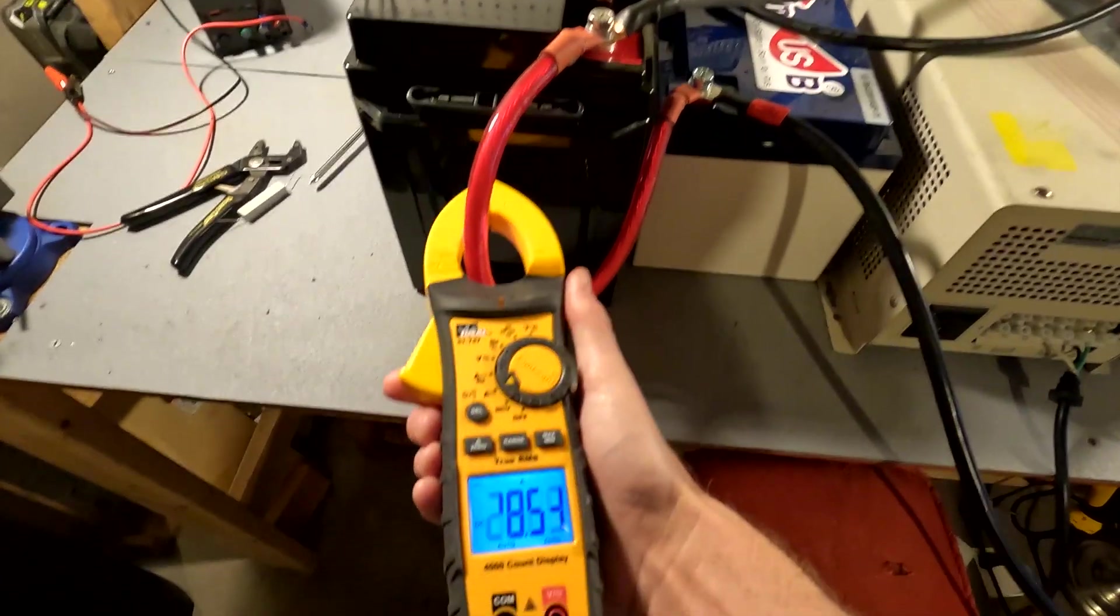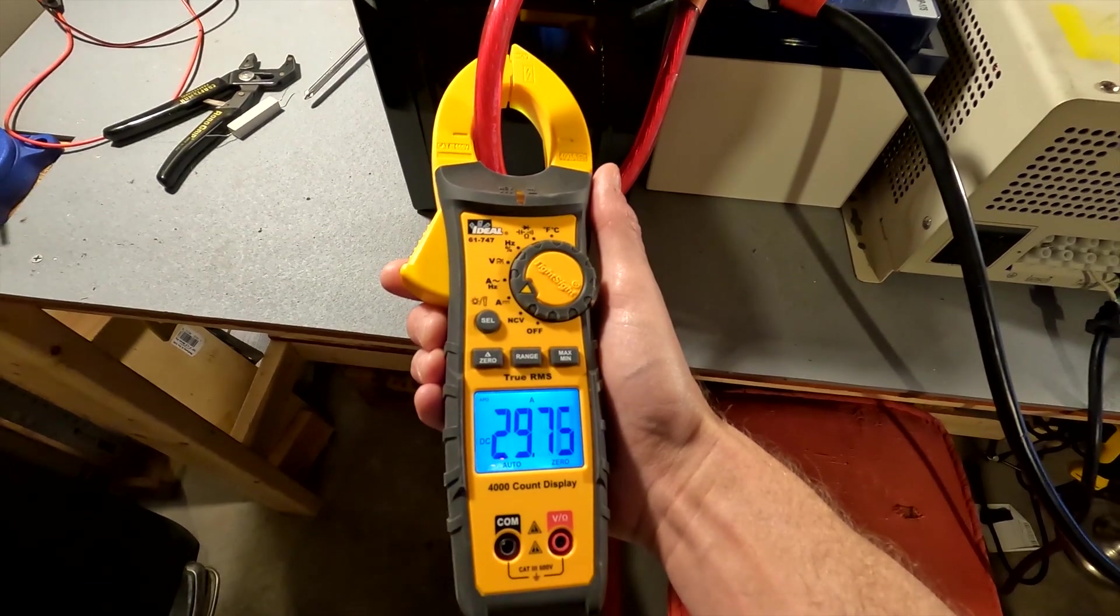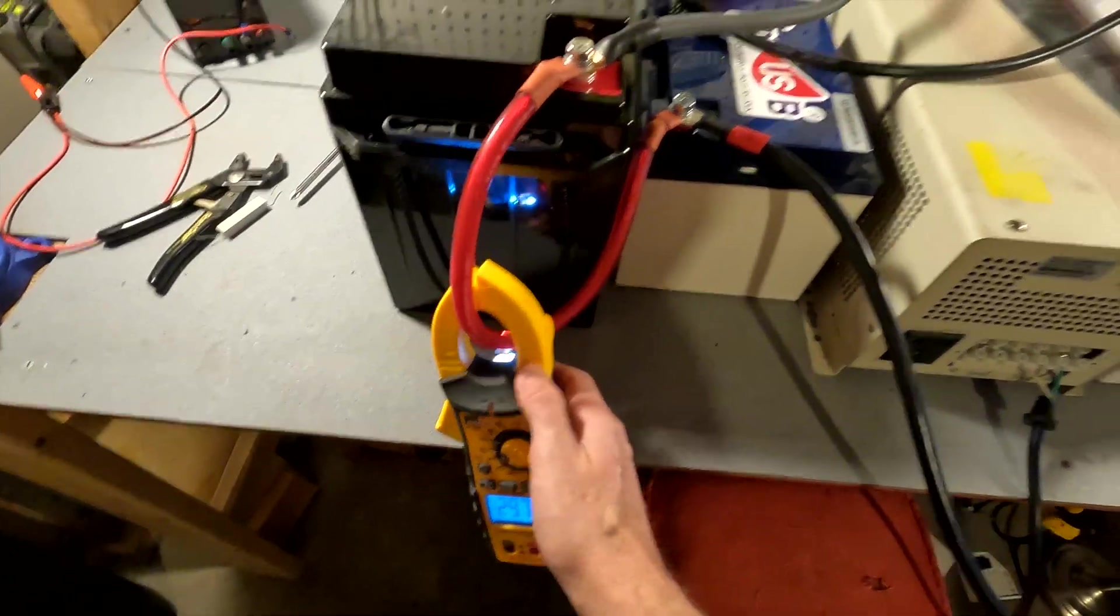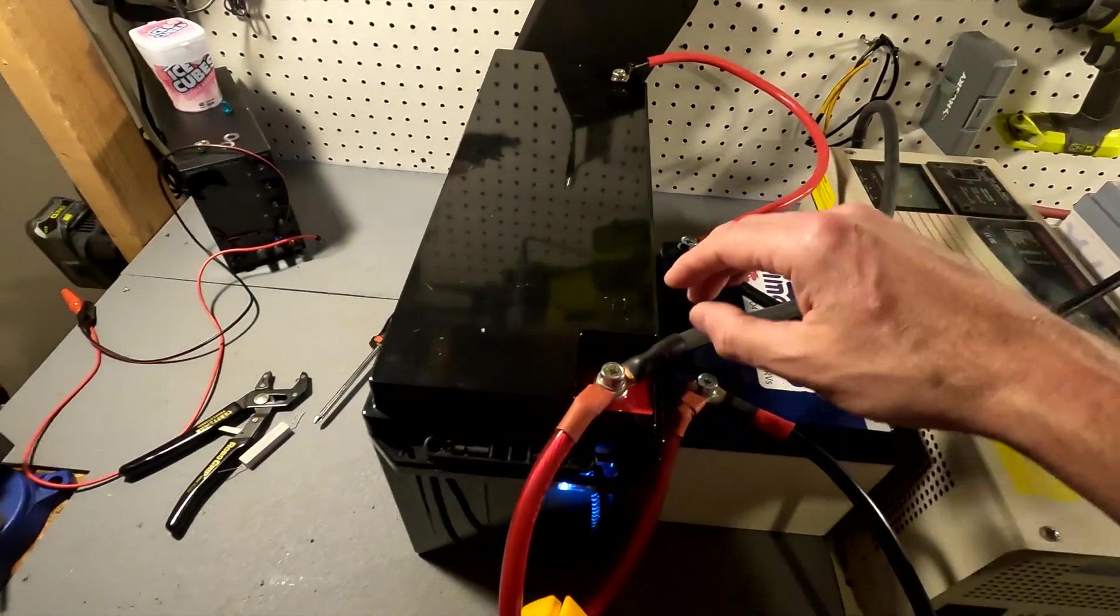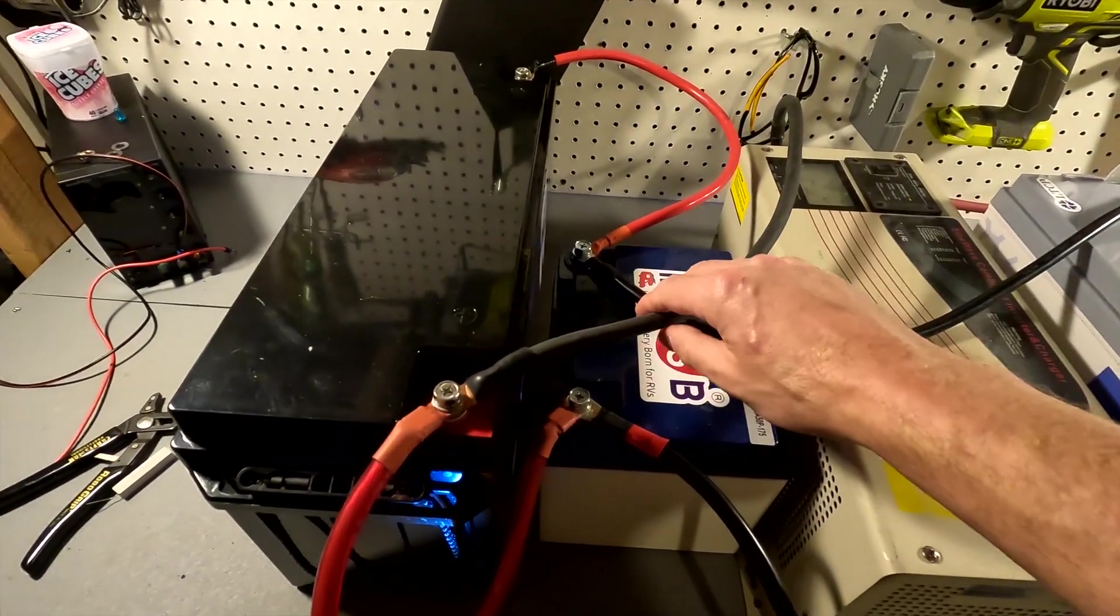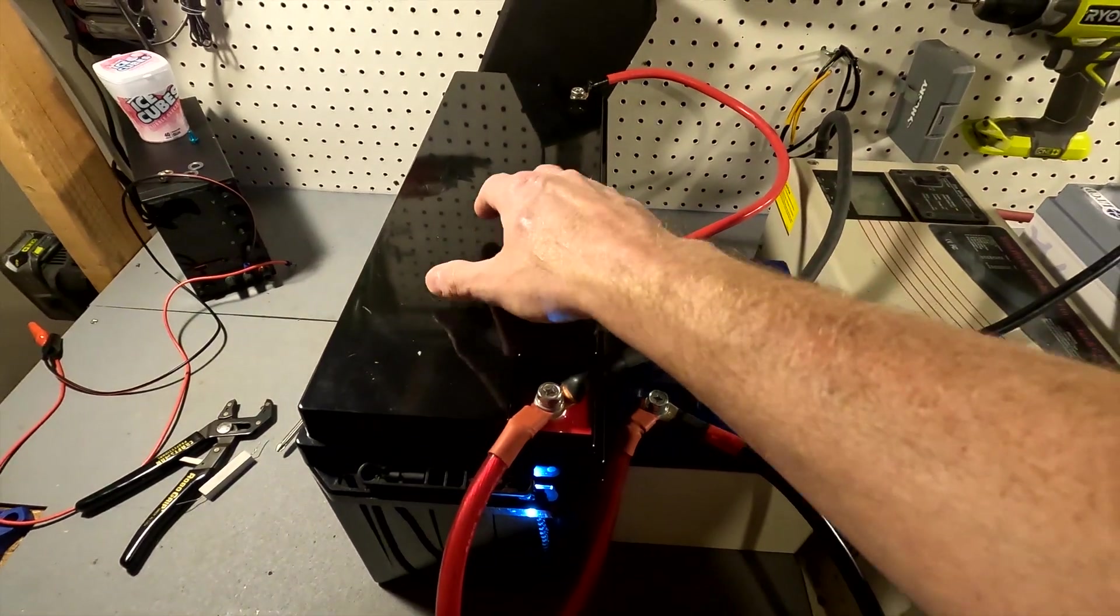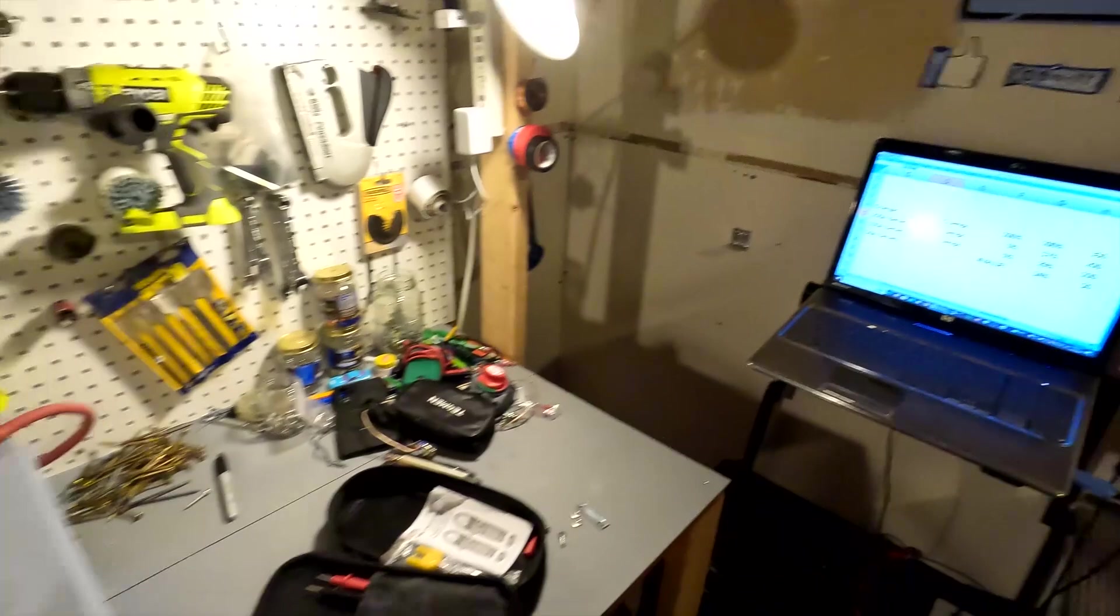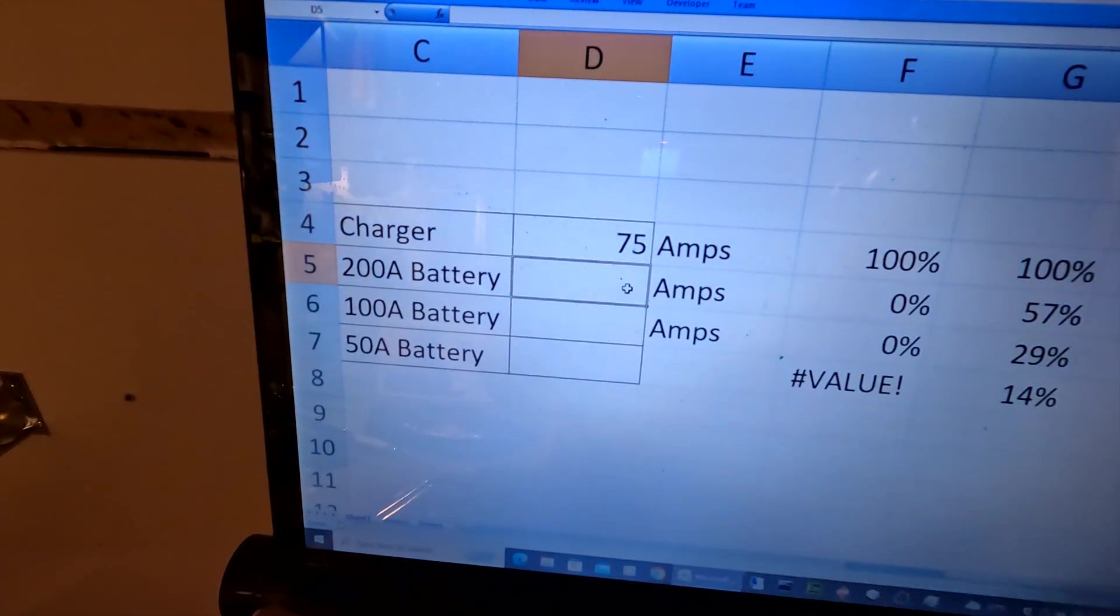Okay, so here is what we're getting right here. This is 29.7, 29.8. So we're just going to say 30 amps. So how to figure out what this battery is accepting is you subtract 30 from what the total is. So 75 minus 30 equals 45 amps is what's going into this battery right here. So let's put in our equation, let's put 45 amps.